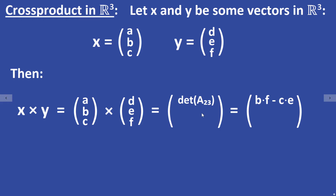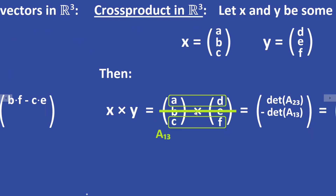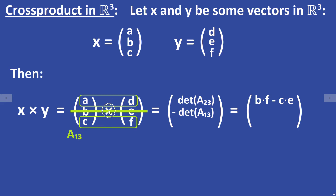For the second entry of the cross product, you cross out the second row. The second entry is equal to minus the determinant of this submatrix, so it is equal to C times D minus A times F. Please don't forget the minus sign here — it is minus the determinant of this submatrix.